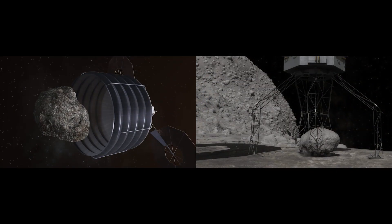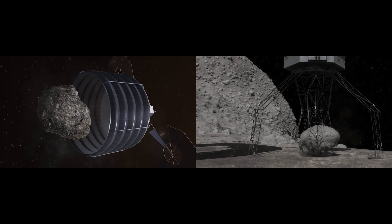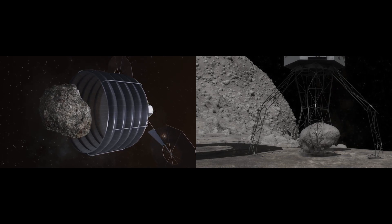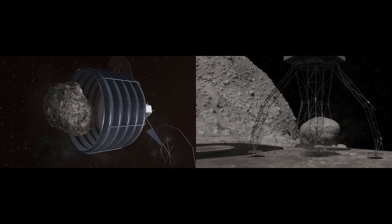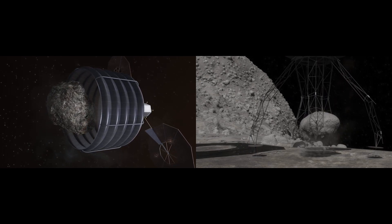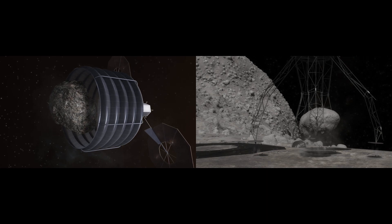NASA is studying two robotic concepts to capture an asteroid. The first concept would fully enclose a small asteroid in an inflatable mechanism. The second would use robotic arms to retrieve a boulder from the surface of a much larger asteroid.